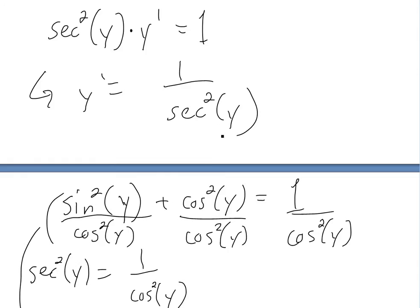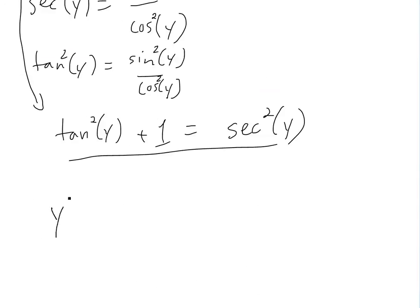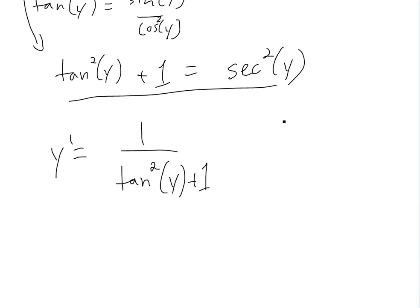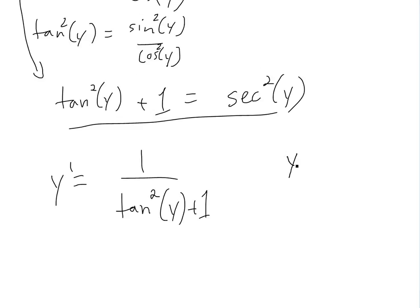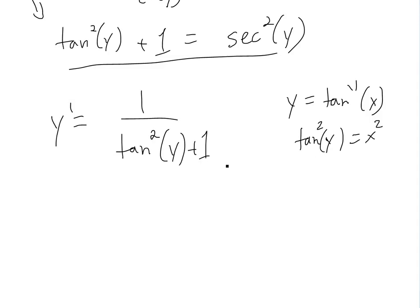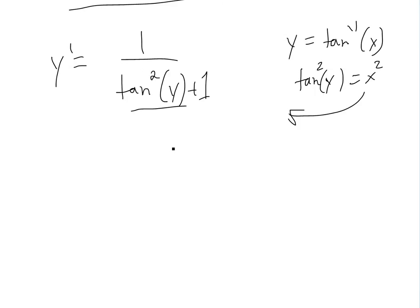We plug this identity back into our derivative. So y prime equals 1 over tan squared y plus 1. And from our original definition, tan y equals x, so squaring both sides gives tan squared y equals x squared. Substituting that in, we get y prime equals 1 over 1 plus x squared.